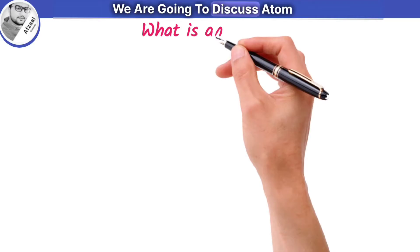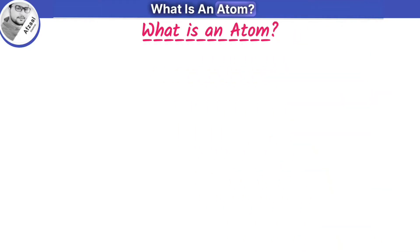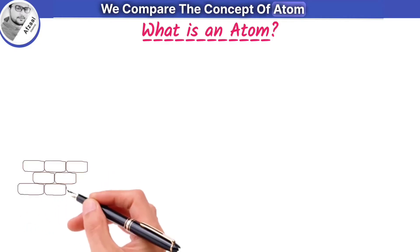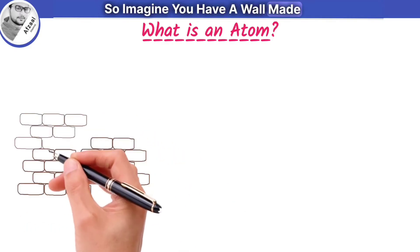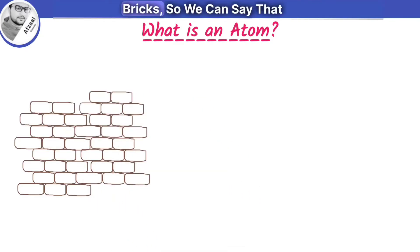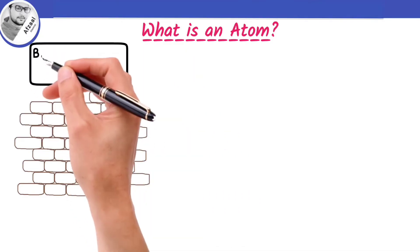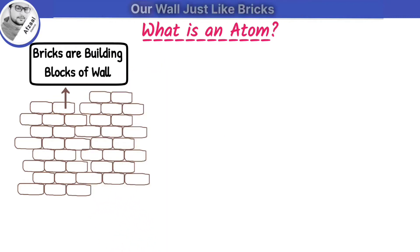First of all, we are going to discuss atom. What is an atom? To make it easier to understand, we compare the concept of atom with bricks in a wall. So imagine you have a wall made of bricks. Because the wall is made up of bricks, we can say that bricks are the building blocks of our wall.